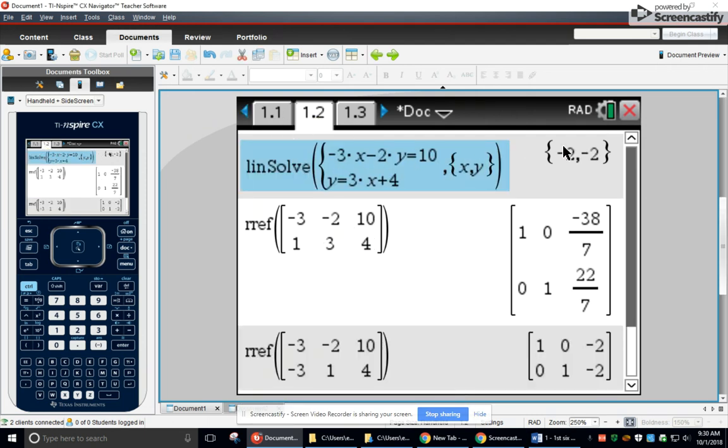Type it in. Here it is highlighted. I get negative 2, negative 2. Just menu 3, 2.